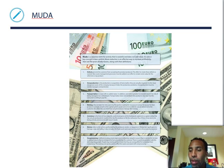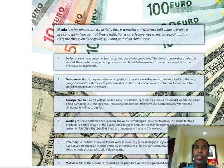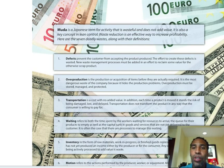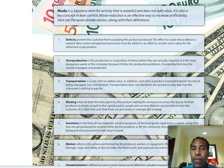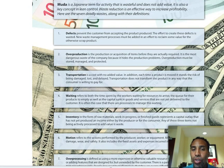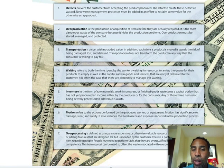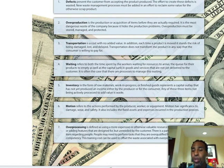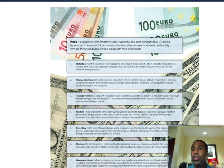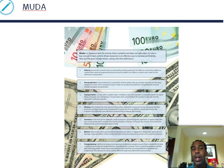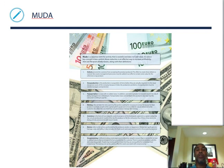Muda is a Japanese term for activity that is wasteful and does not add value — it is a key concept in lean control. Waste reduction is an effective way to increase profitability. The seven deadly wastes are: defects, overproduction, transportation, waiting, inventory, motion, and over-processing. Understanding these can help you identify waste in your own work and free up time for higher-value activities.